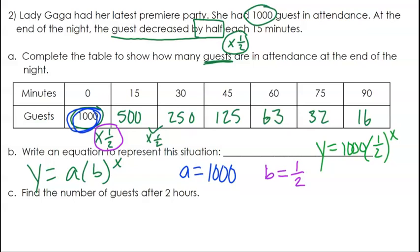And now we can use this equation to answer part c. Again, find the number of guests after 2 hours. Now 2 hours, we need to convert to minutes because that's what we were using for our value for time. 2 hours is 120 minutes.